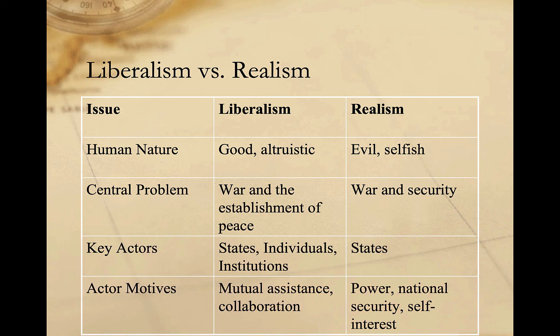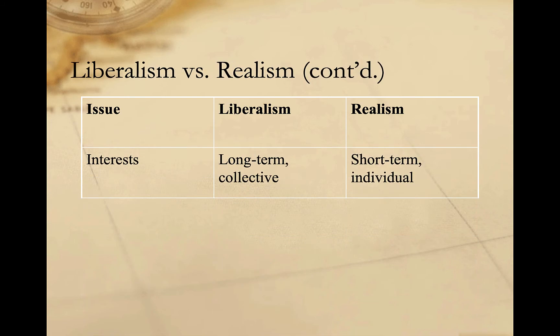For liberals, actors are motivated by the possibility of cooperation and mutual assistance. But for realists, it's all about power, national security, and self-interest. For liberals, it's possible for states to take longer-term perspectives on the national interest and to make sacrifices in one area for advances in another. It's also possible to think about a community or collective interests for groups of states. Realists reject this, asserting that only individual interests of the state matter. As a result, their focus tends to be on more immediate survival of the state.